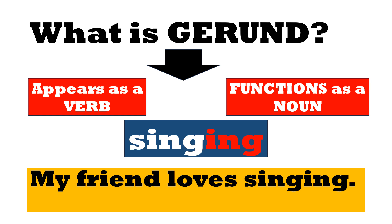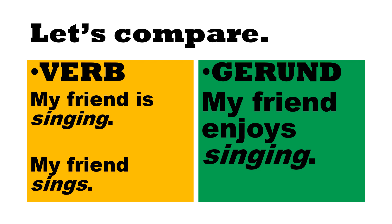For instance, we have this sentence: 'My friend loves singing.' So where is the gerund here? It's easy to identify — we have the word 'singing.' Let's explain it further, because for some it's not yet clear, since it seems like a verb. Let's try to compare.